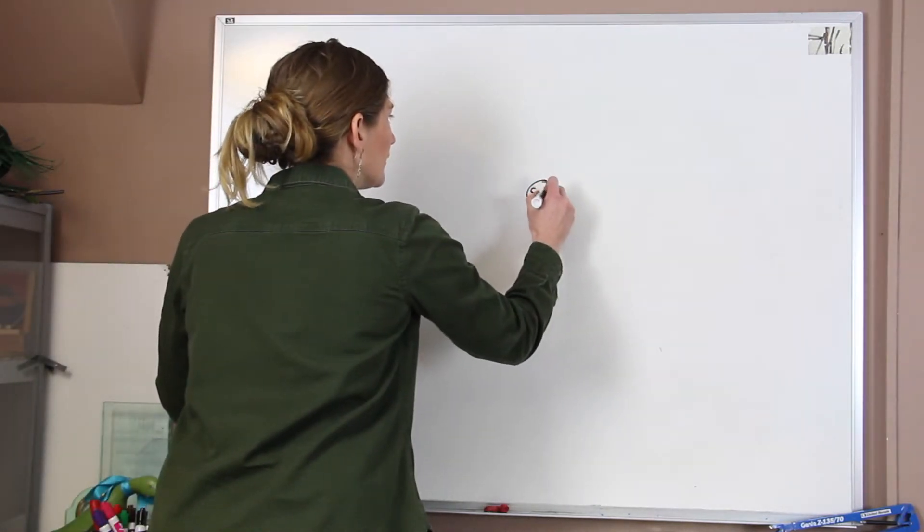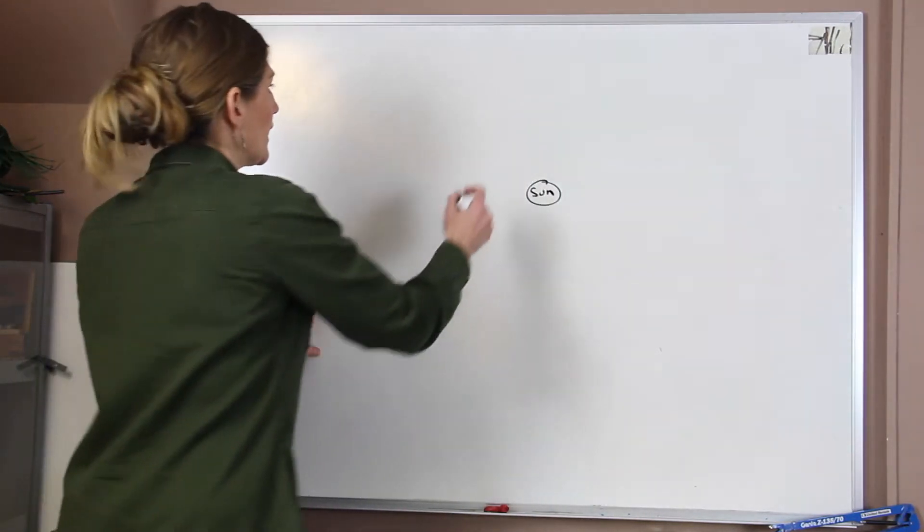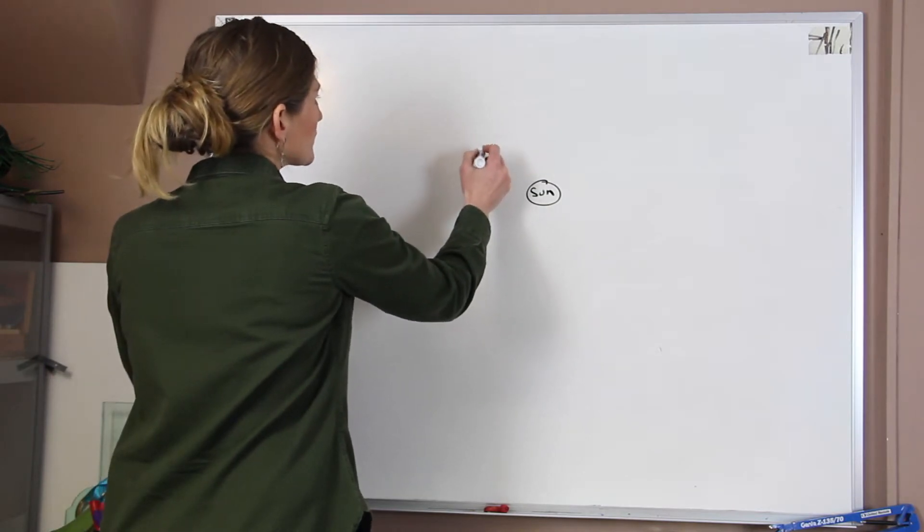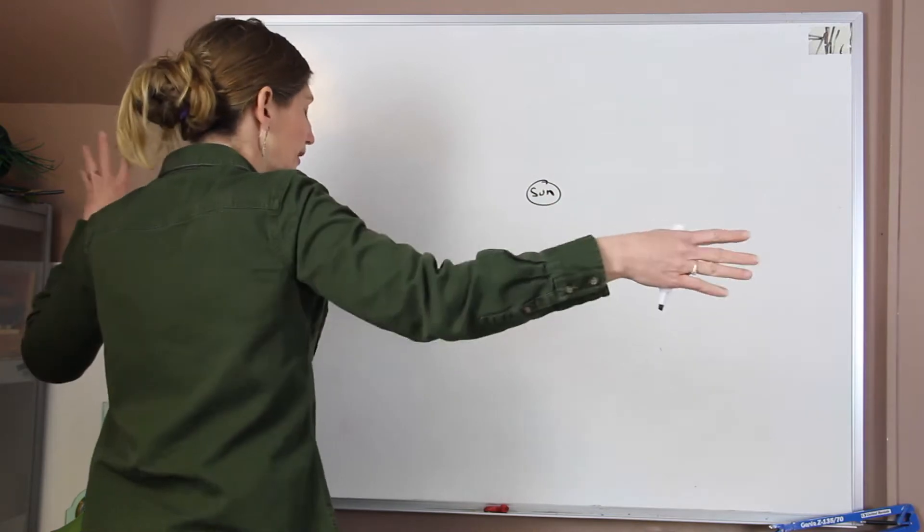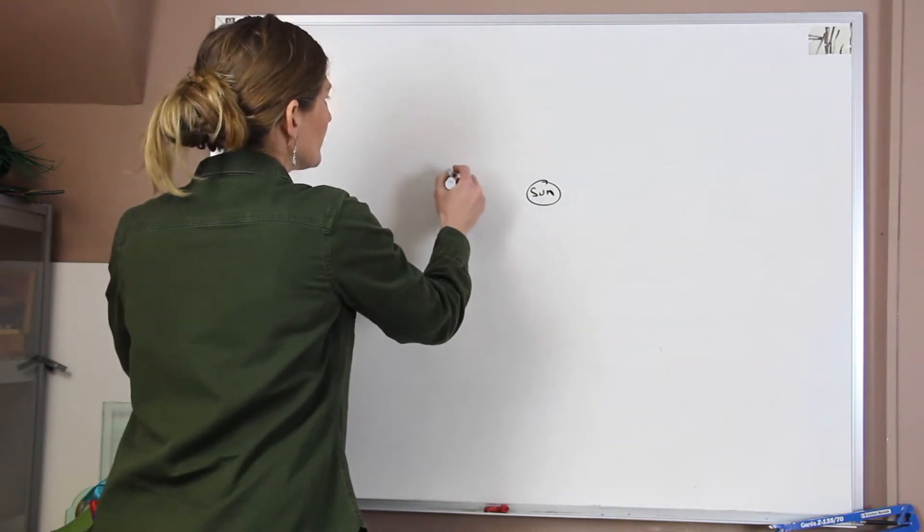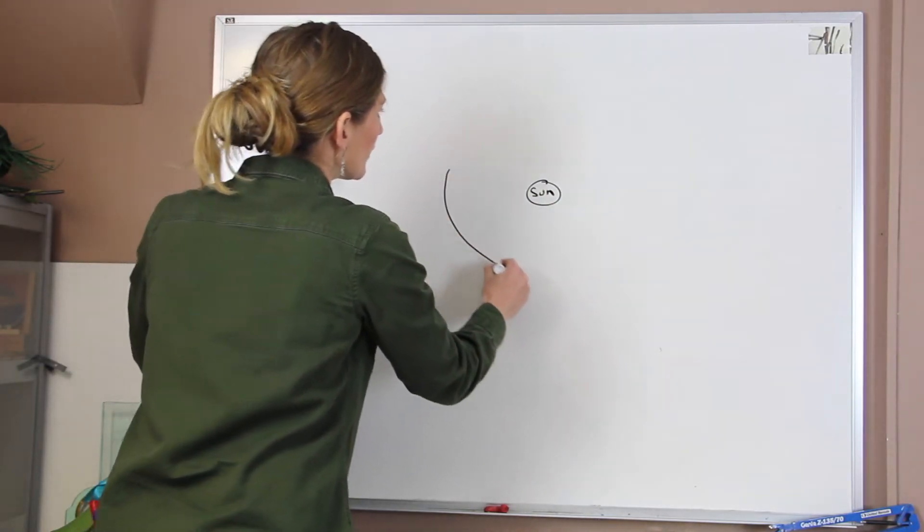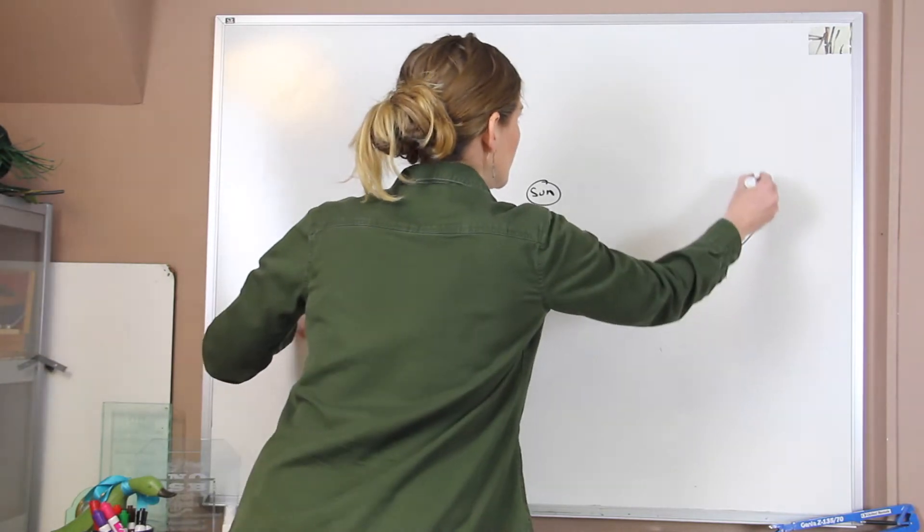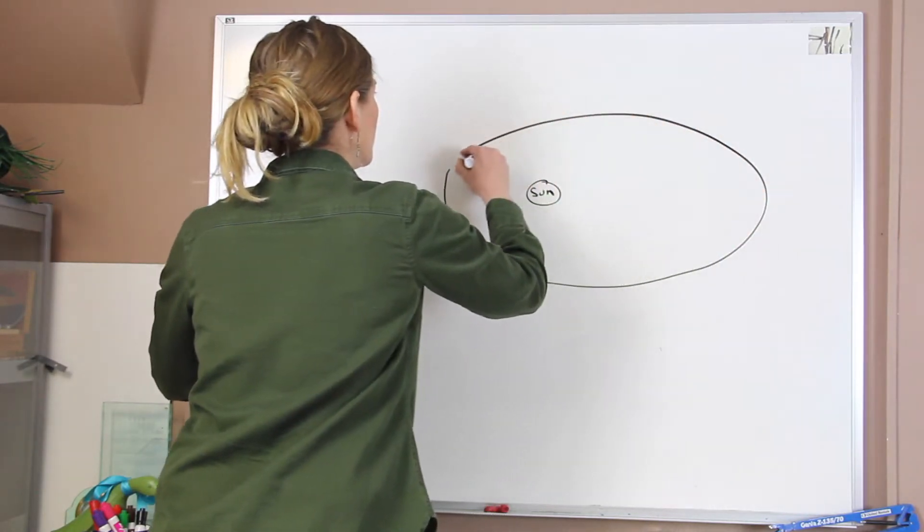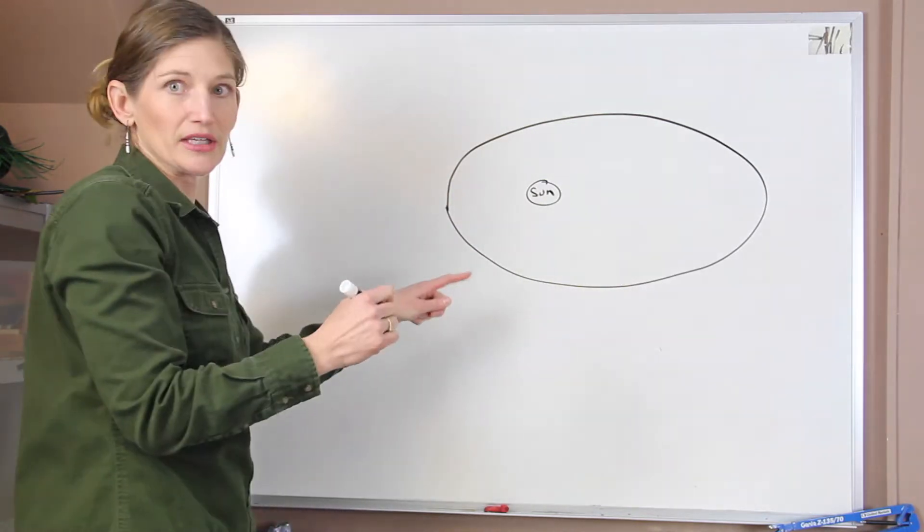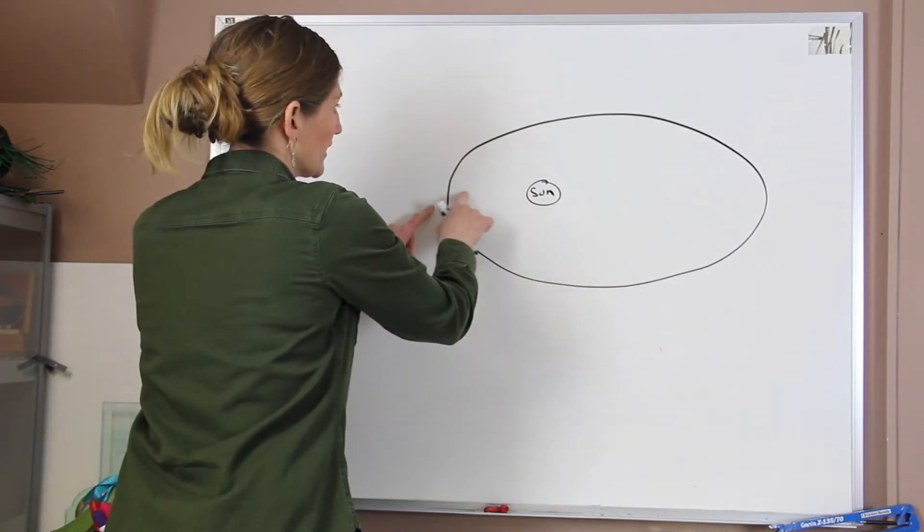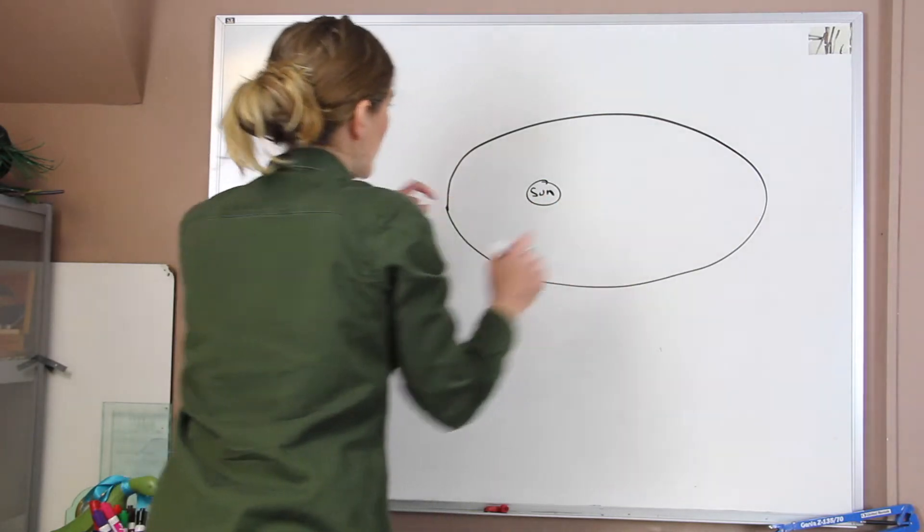We're going to put our sun right here in the middle, and we're going to draw the Earth's orbit, kind of looking down, if we were to be floating above our solar system. And what we find out is that our Earth has a slightly elliptical orbit. And I'm going to kind of make it a little bit more obvious, so we can see that we're at times closer to the sun and farther away.